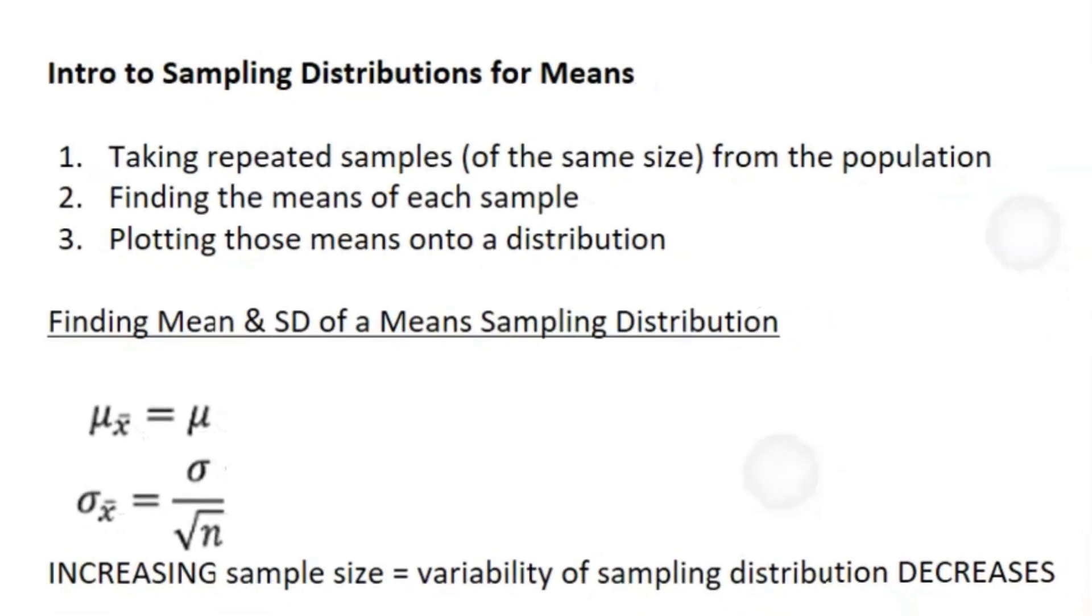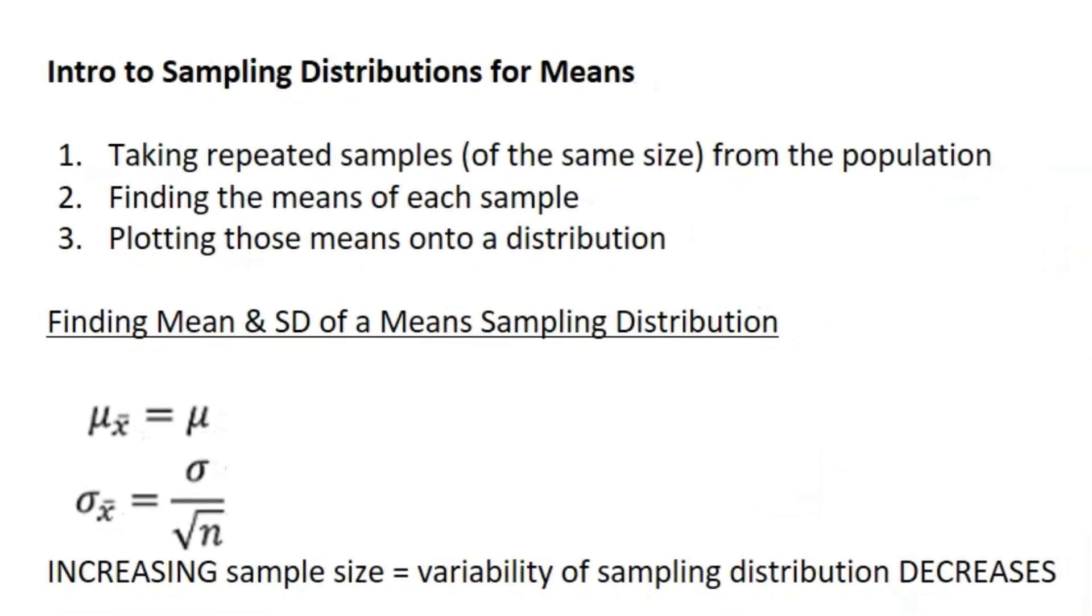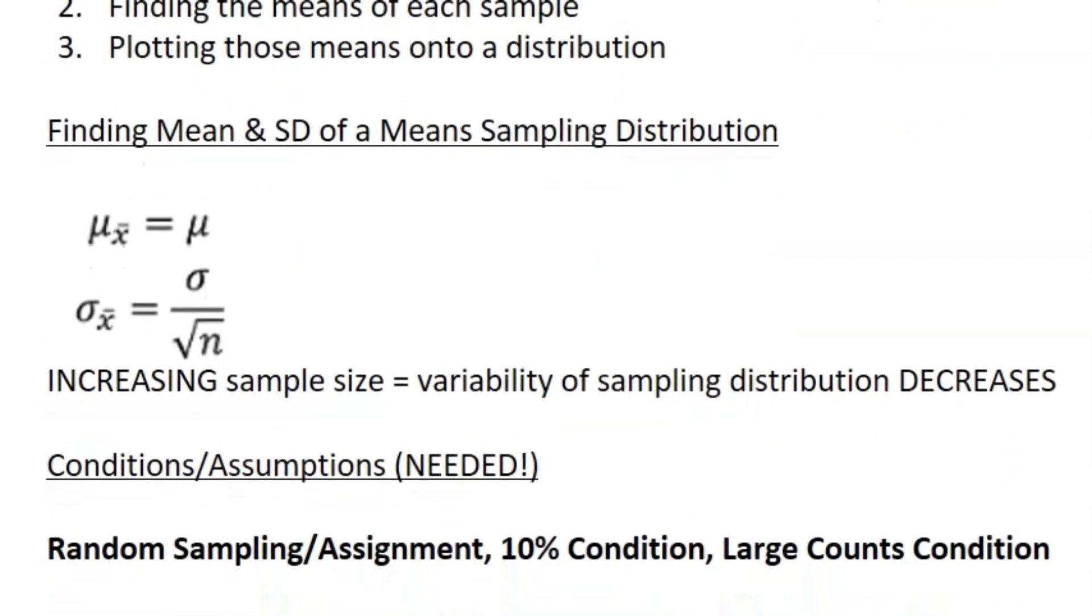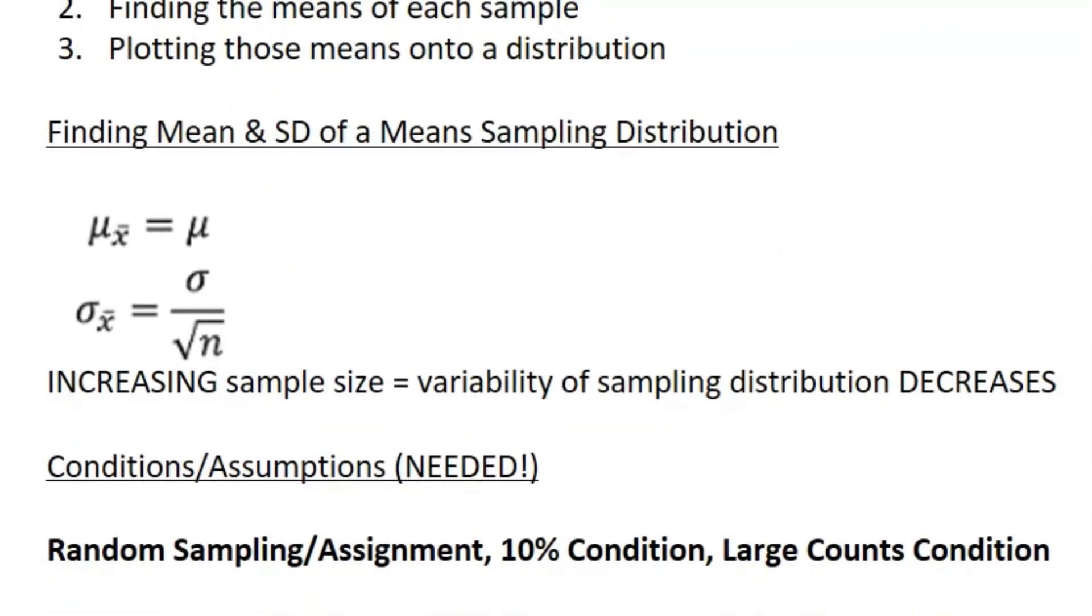All right, now jumping over to means to finish off the unit. You're taking repeated samples just like with proportions, but instead of taking the proportion of each sample, you're taking the means of each sample and applying that onto a distribution. You have some more formulas for the mean and standard deviation of the sampling distribution. These are also on your reference table.